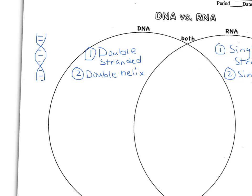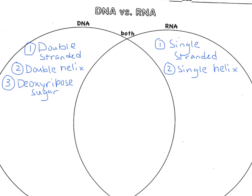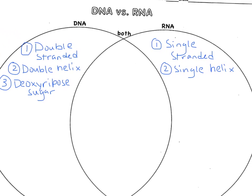The sugar in DNA, we have learned, is deoxyribose. The sugar for RNA is ribose.